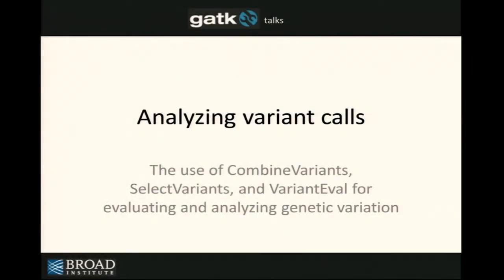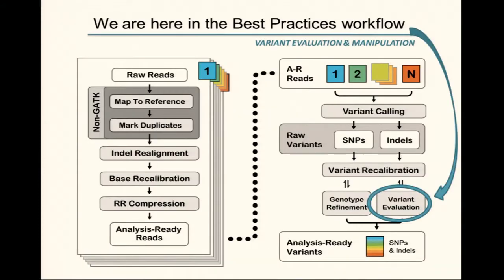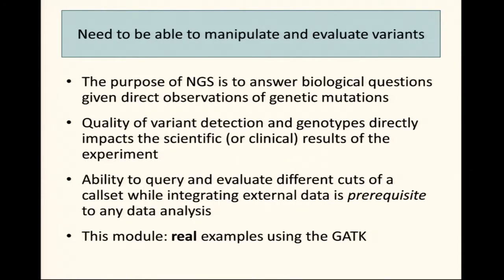On functional annotation, and having done genotype refinement, you've gotten all your calls and you want to analyze them in some way. Sort of the branch is here — you've done everything, but now you want to evaluate and see: are my variants good? Can I use them to make predictions, can I use them to answer the questions that I asked when I first set up my particular experiment?